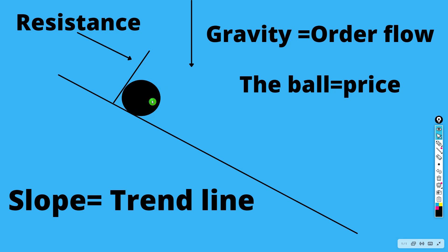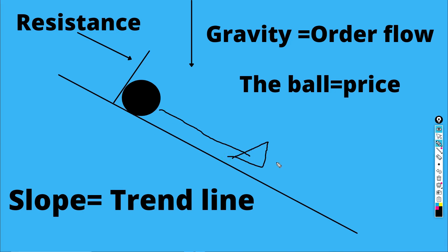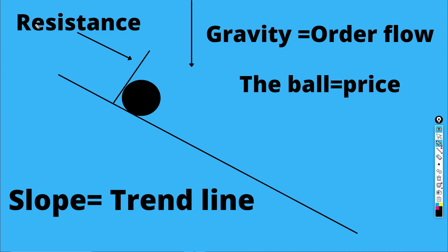What is your common sense telling you? If you leave a ball on a slope, what will happen? Very simple — the ball will start to roll down automatically. Why? Because of gravity. The gravitational force will automatically push the ball down when there is a slope. Now how can we relate this concept to our trading? Gravity is the downward direction.